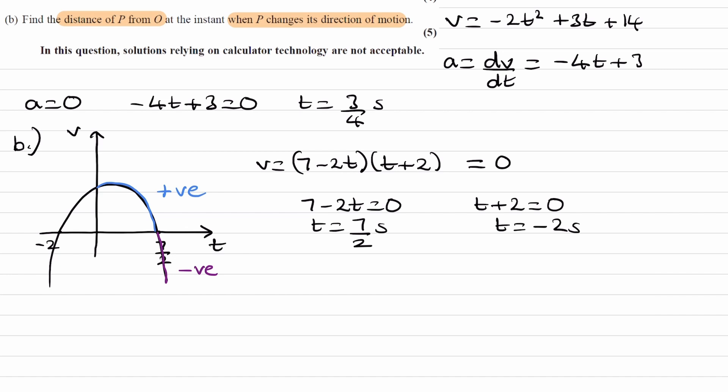This point right here is the point where the object changes from going forwards to backwards. So we're trying to work out the distance from 0 seconds to 7 over 2 seconds. We can work that out by integrating velocity. If we integrate velocity between 0 and 7 over 2, that gives us this area here, and that is the area we want to work out.